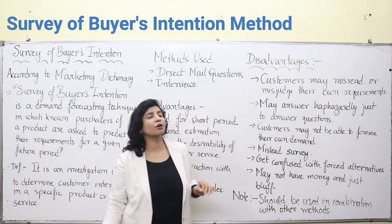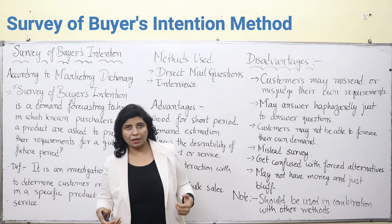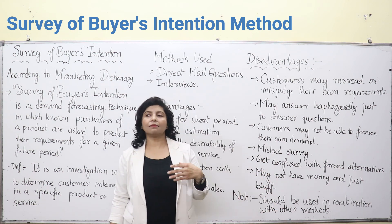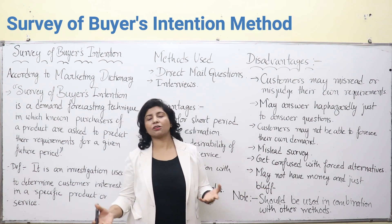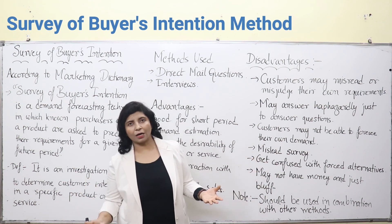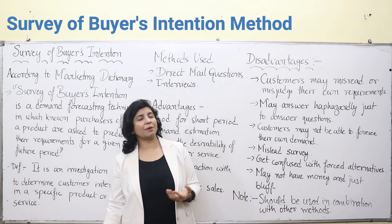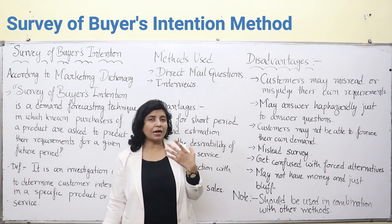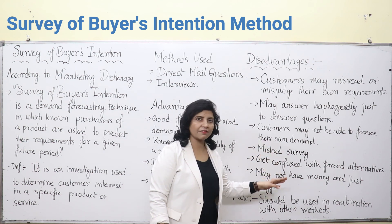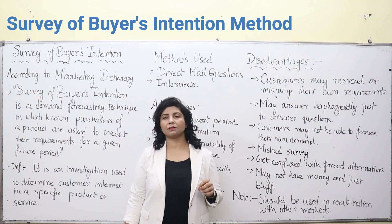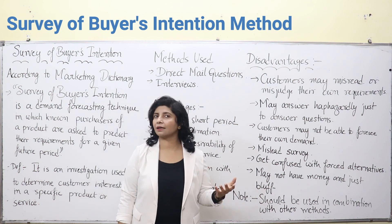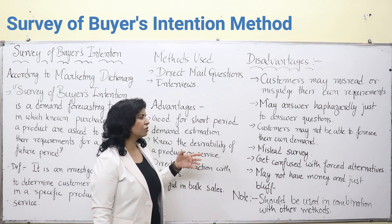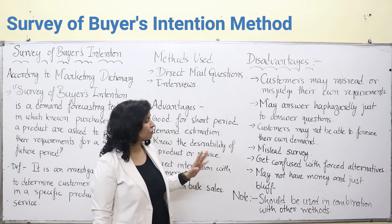Customers may not be able to foresee their own demand. For example, we may not normally use potatoes at home, but when a festival comes or a guest asks for a dish made of potatoes, we suddenly demand potatoes — any commodity we may demand abruptly or all of a sudden. So we may not be able to foresee our own demand and cannot supply correct answers. Additionally, a mislead survey can occur — many respondents may deliberately give wrong answers, may not want to reveal their correct answers, or just want to shun you off.